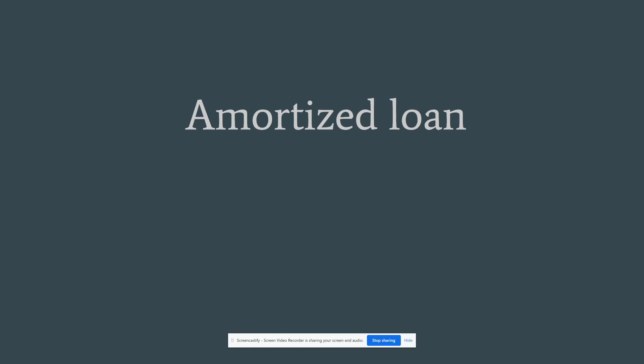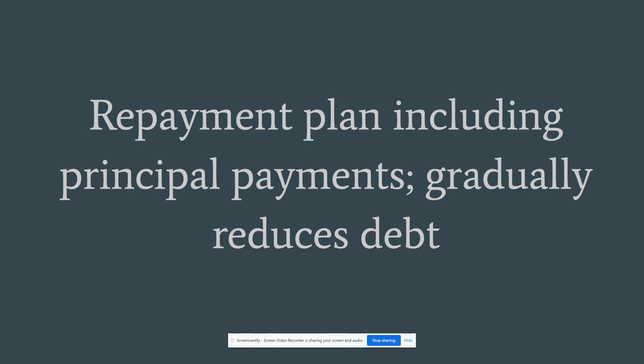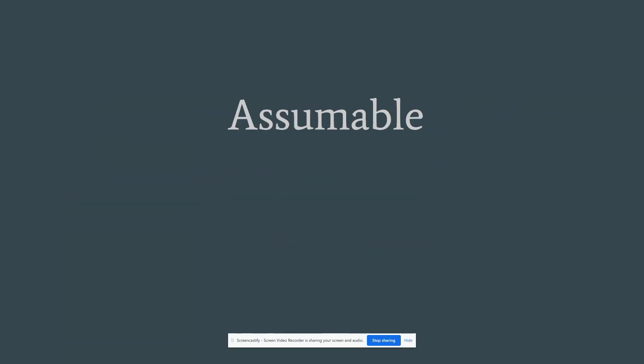Amortized loan. That is a repayment plan including principal payments, and it gradually reduces the debt down to nothing. A fully amortized loan is one that is going to just gradually pay off over the term of whatever the loan is.